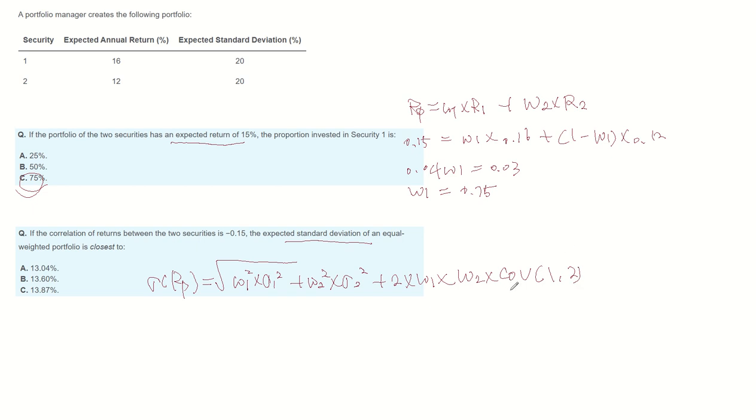In this question, covariance is not known, but we know the correlation. So we can rephrase covariance as correlation of Security 1 and 2, multiplied by sigma 1, multiplied by sigma 2, and the rest is the same.